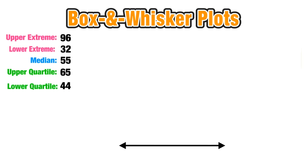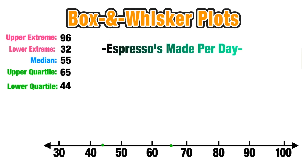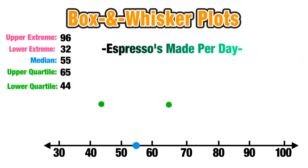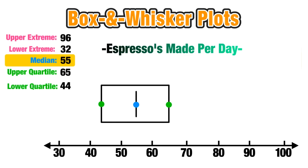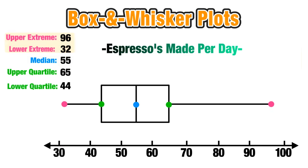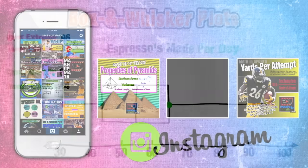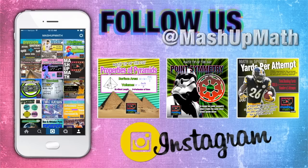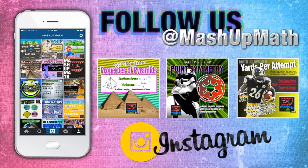We construct a number line, mark the upper and lower quartiles at 65 and 44, and plot the median at 55. We draw vertical lines through the quartiles, construct the rectangle, and draw a vertical line through the median. Then we plot the extremes at 32 and 96 and draw the horizontal whiskers to complete the box and whisker plot. Now you're ready to visually analyze your data! Thanks for watching, and follow us on Instagram at MashUp Math for daily math tips, animated flashcards, and math in sports infographics.